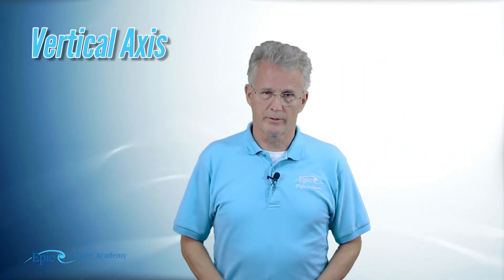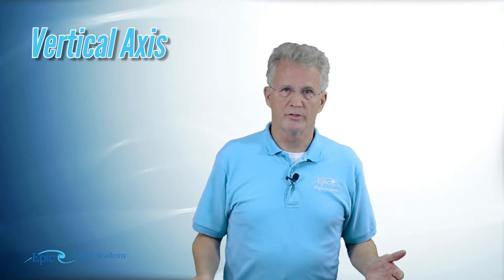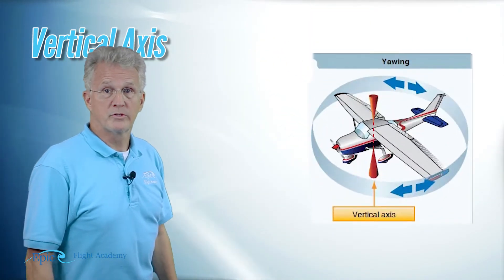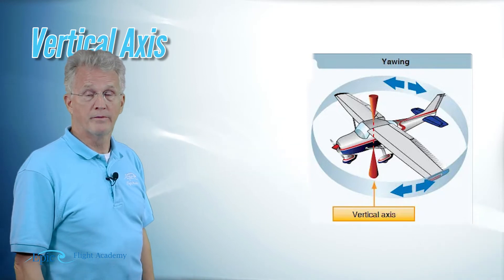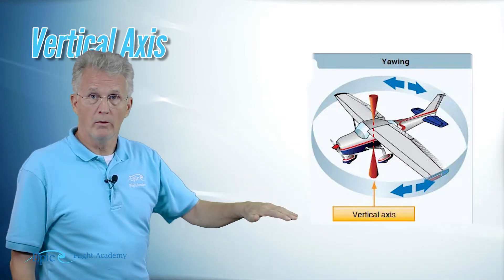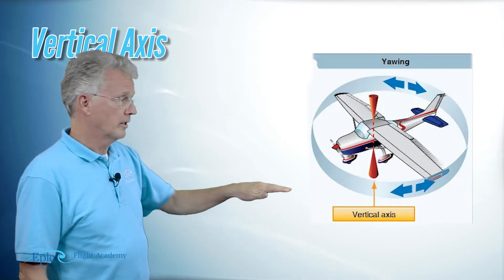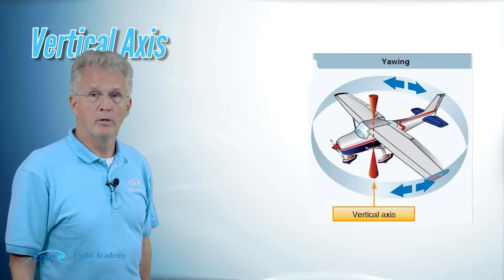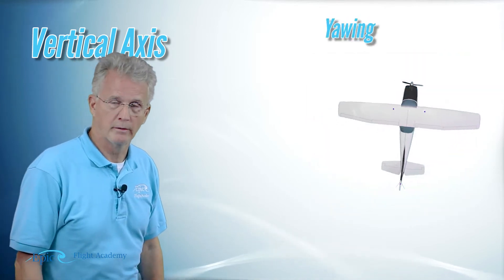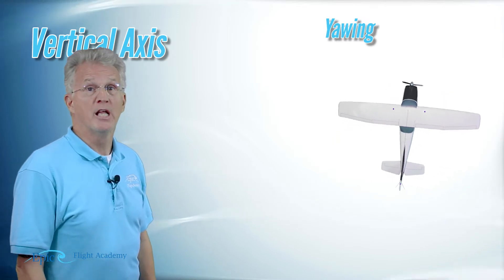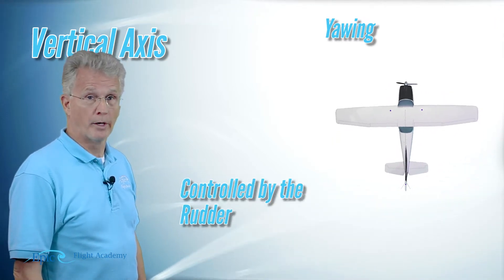The third axis is the vertical axis, and it's exactly what it says it is. Imagine this axis going vertically through the center of gravity of the aircraft. The aircraft's nose is moving left and right in a flat plane. That motion is called yawing — with a Y — and that yawing motion is controlled with the rudder.